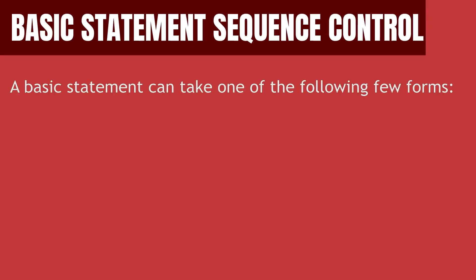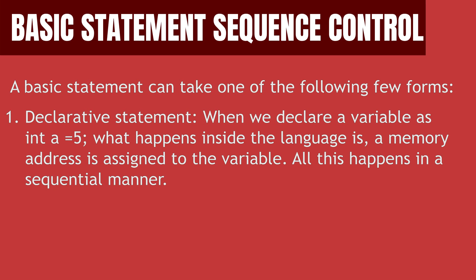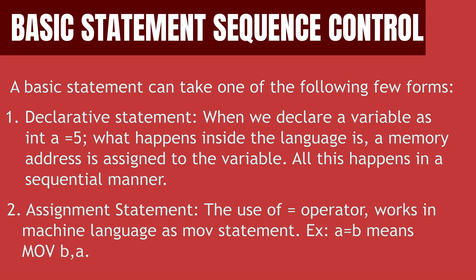A basic statement sequence control takes one of the below mentioned forms. The first one is declarative statement. Whenever we declare a variable, we know that a memory address is assigned to every variable dynamically. This is the first step before we store any value in that variable, and hence all these take place in this specified sequence. Next comes assignment statement. In this, we use an assignment operator to assign the value to the above declared variable. This is the follow-up sequence preceded by declaration statement first.